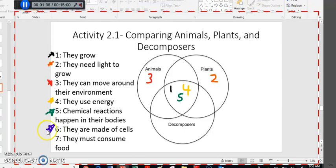Made of cells. What about made of cells? Well, think about it this way. If I were to put an animal under a microscope, would I see cells? Or how about a plant? Or how about a decomposer? I think that for all of these things, if you were to look at them under a microscope, you would find some cells. So, I think six probably belongs in the middle as well.